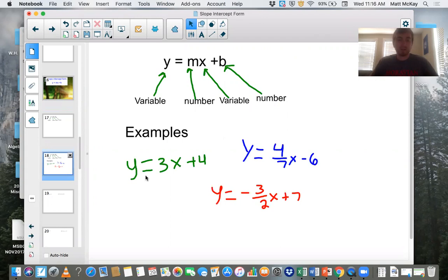So here's some examples down here that I put. It could be y equals 3x plus 4. It could be y equals 4 sevenths x minus 6. It could be y equals negative 3 halves x plus 7. So even though here it shows plus b at the end, it could be subtract a number. It could be a fraction. It could be a whole number. It could be positive or negative. So again, the m and the b are numbers, any kind of numbers, positive, negative, fractions, whole numbers. And then the y and the x both stay as y and x. And that's going to be slope intercept form.